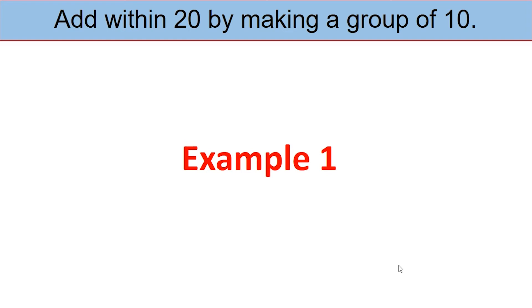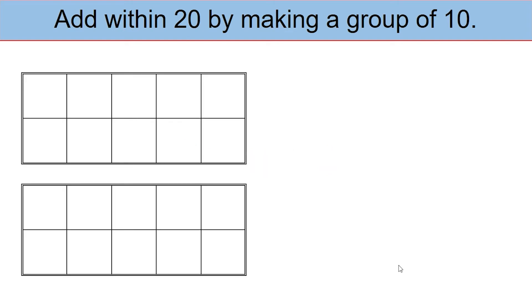Let's add within 20 by making a group of 10. Example number one. Use two of the tens frames. You will be using the red counters and the yellow counters for this strategy. Let's begin with adding 8 plus 7.